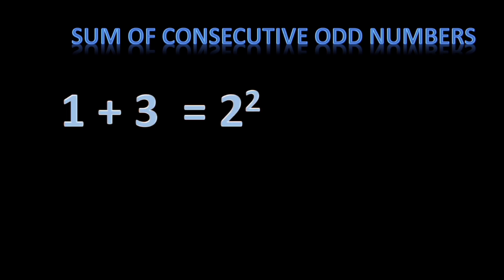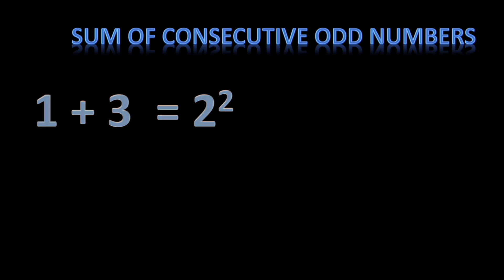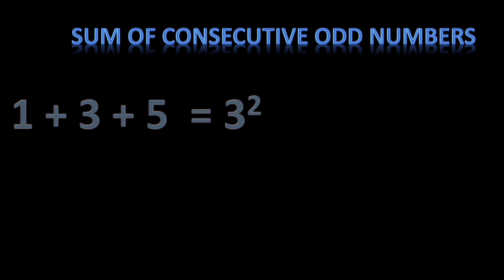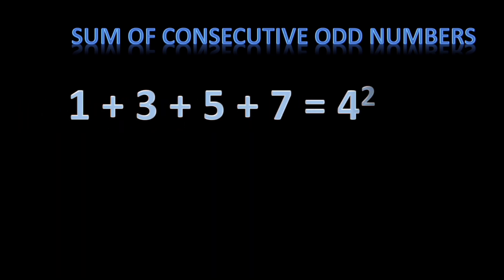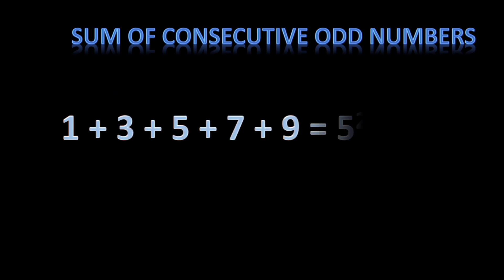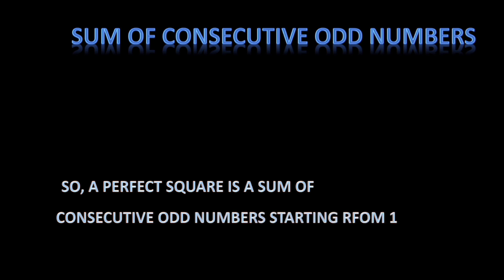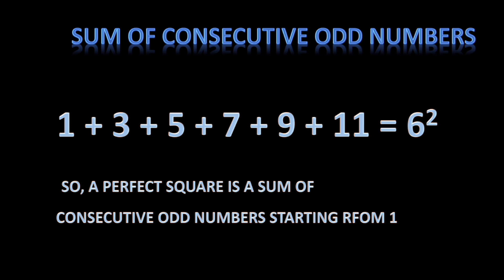Next: sum of consecutive odd numbers. When we add two consecutive odd numbers starting from one, we get 2². When we add three consecutive odd numbers starting from one, we get 3². Likewise, four odd numbers give 4², five odd numbers give 5². A perfect square is the sum of consecutive odd numbers starting from one. Six odd numbers added starting from one gives 6².